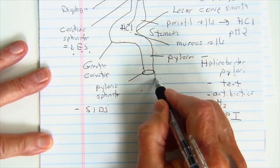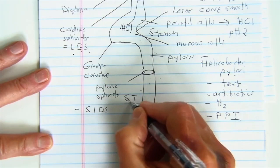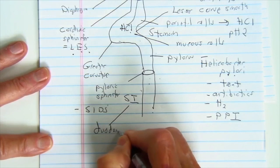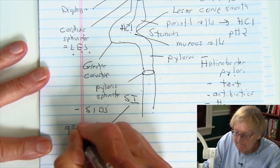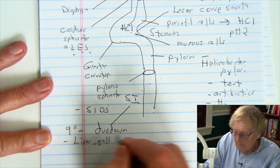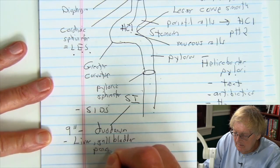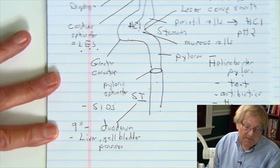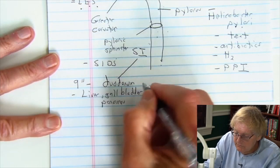Once I leave the pyloric sphincter, I'm going to go into the small intestine or SI. Remember the small intestine is comprised of the duodenum. That's probably the most important portion. It's only about nine inches long, so it's a very short portion. That's where I'm going to have the liver and the gallbladder and the pancreas are going to have their exocrine secretions into the duodenum. That's why it's so significant.